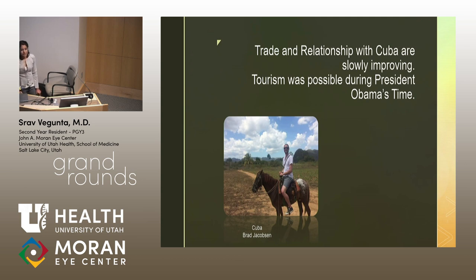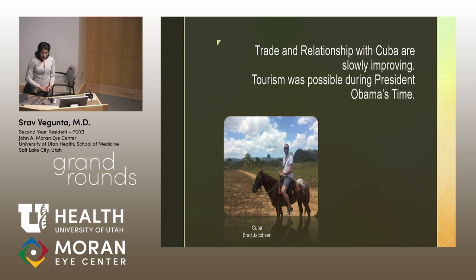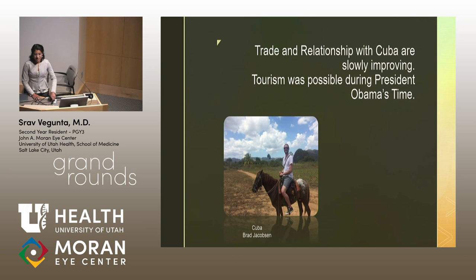Cuba had the same sort of problem — illegal brewing with methanol in the brew. When we were in Micronesia, one of the partners was talking about how young men there also get easy access to cheap alcohol this way, and they end up going blind because of the methanol they're consuming.